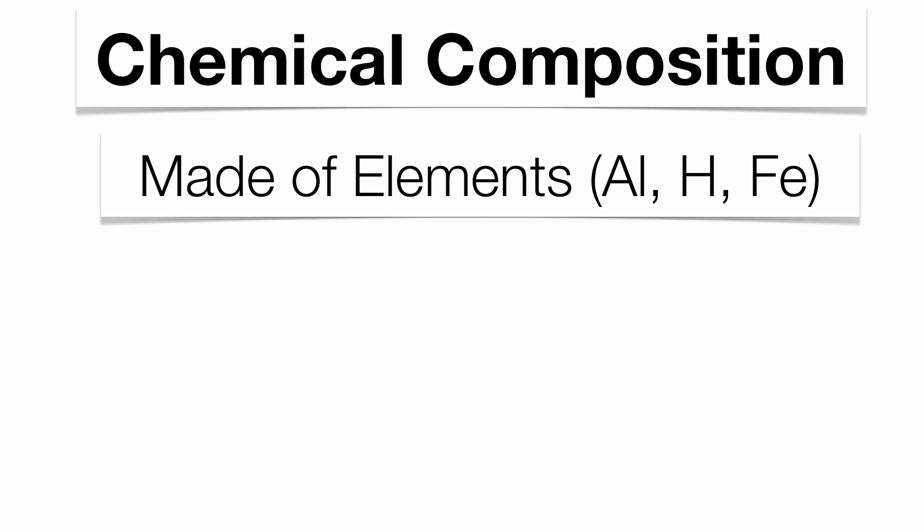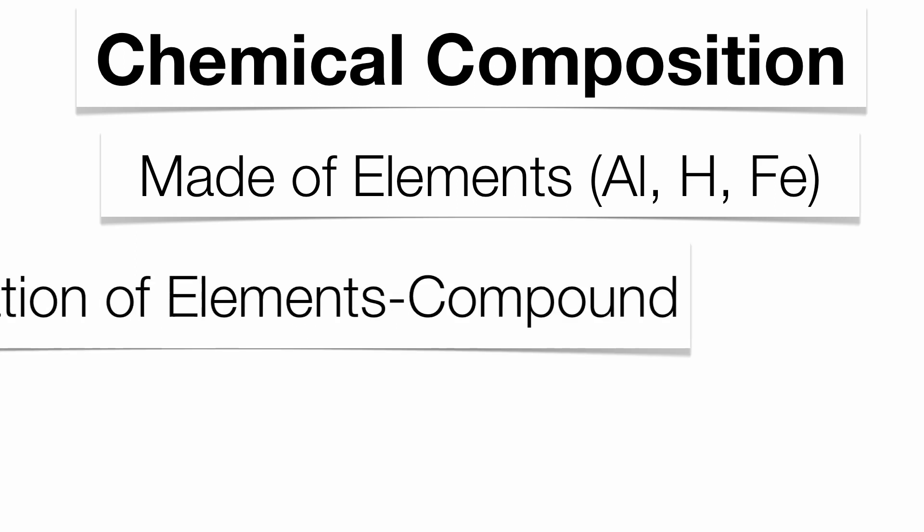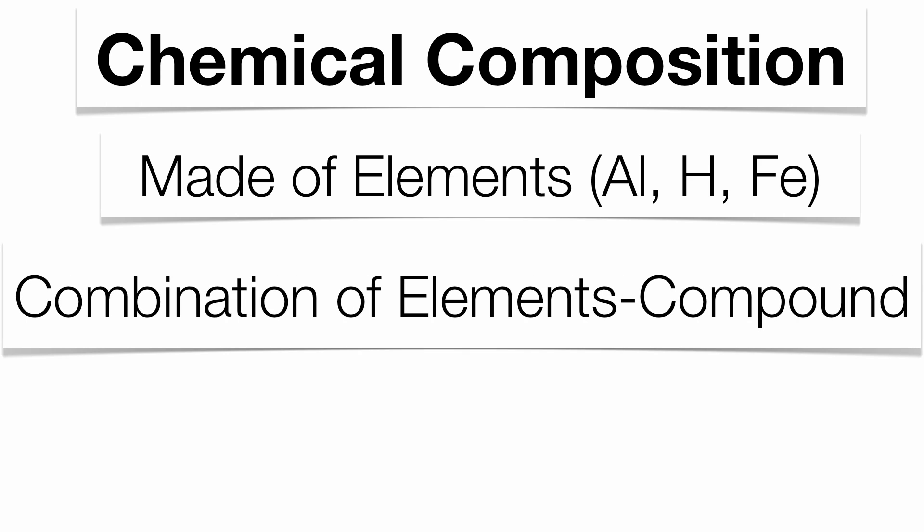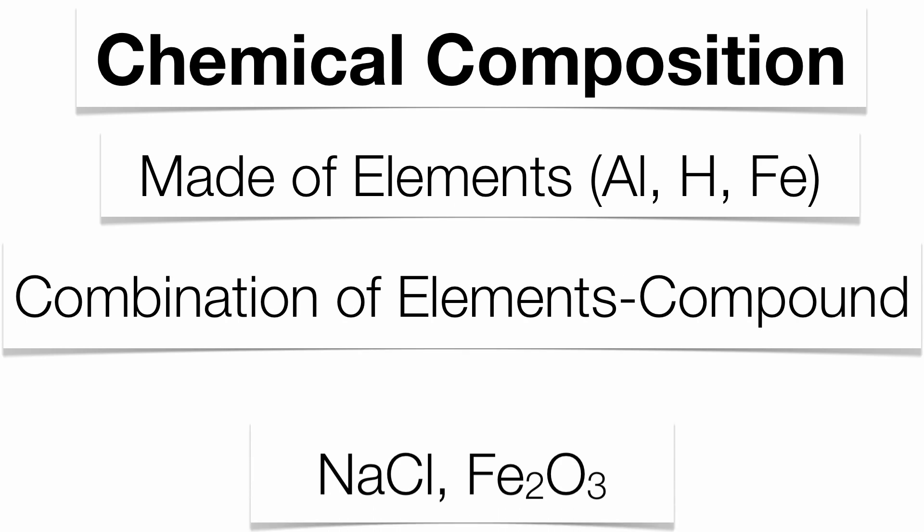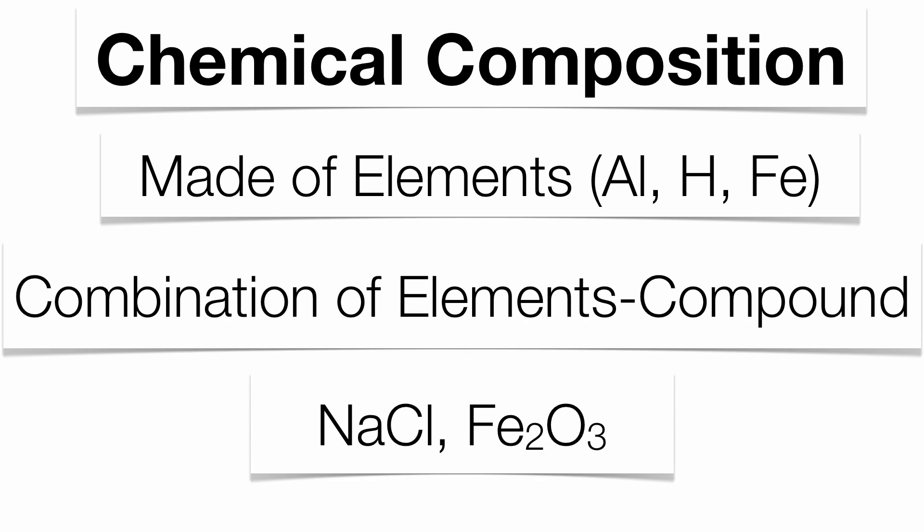The chemical composition is important because some minerals are going to be made up of a single element. Some are made up of a multitude of elements, called a compound. The majority of your minerals on your reference table are going to be made up of compounds such as NaCl and Fe2O3.